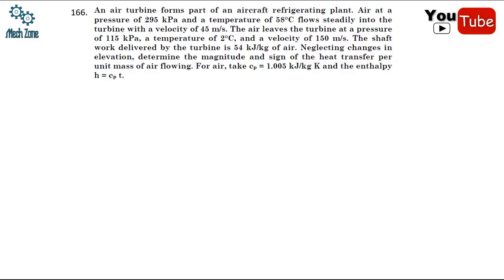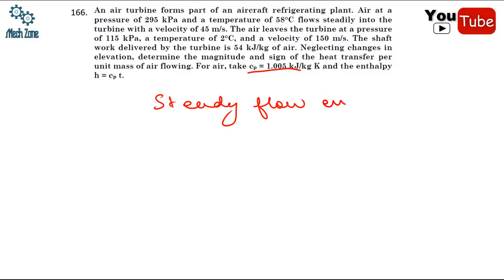The shaft work delivered by the turbine is 54 kilojoule per kg of air. Neglecting changes in elevation, determine the magnitude and sign of the heat transfer per unit mass of air flowing. For air, the value of Cp to be taken is 1.005.